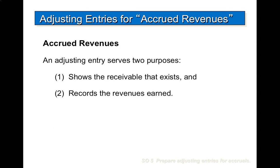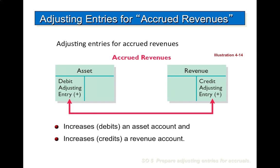An adjusting entry serves two purposes: to show the receivable that exists and to record the revenue earned. The adjusting entry for accrued revenues is going to increase the asset account with a debit and increase your revenue account on the credit side.